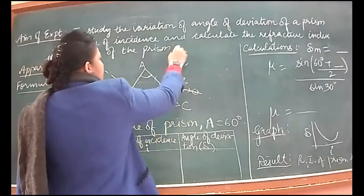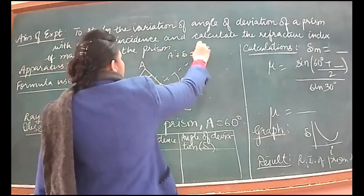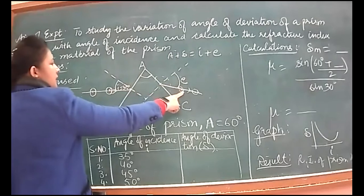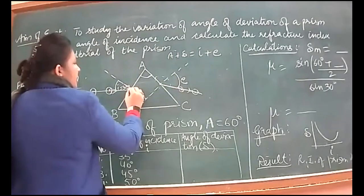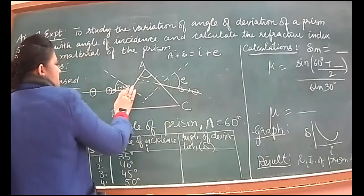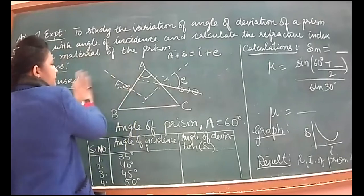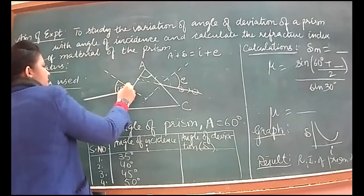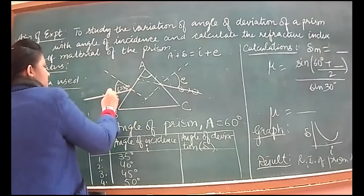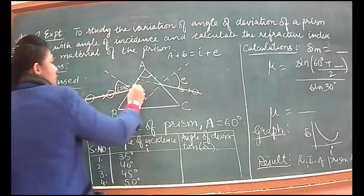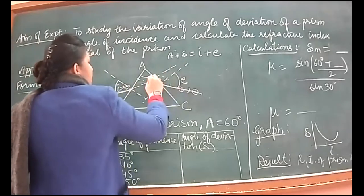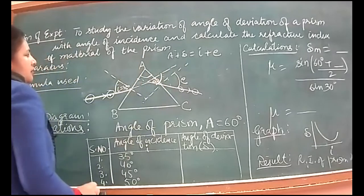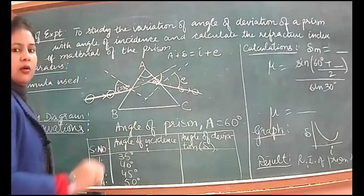Because I have to check the condition A plus delta and I plus E. So I measured I, now I'll measure E. Now I will bring this incident ray and emergent ray backwards. The angle formed between incident ray and emergent ray is delta.